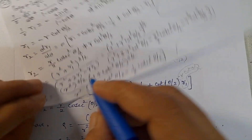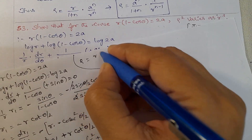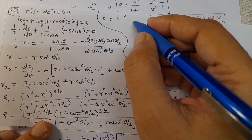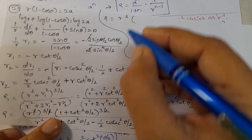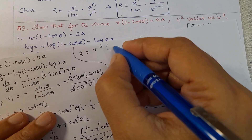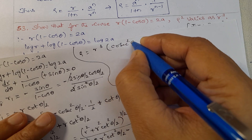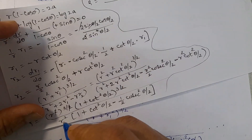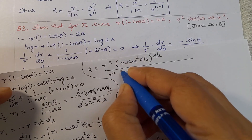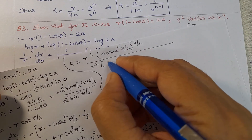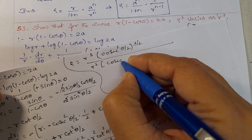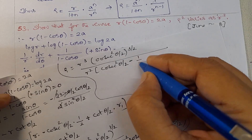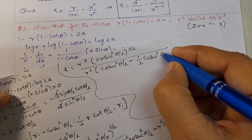The square roots cancel. So ρ = r³ cosec³(θ/2) / [r² × (1 + cot²(θ/2) - 1/2 cosec²(θ/2))]. Using 1 + cot²(θ/2) = cosec²(θ/2) in both numerator and denominator, the expression simplifies.